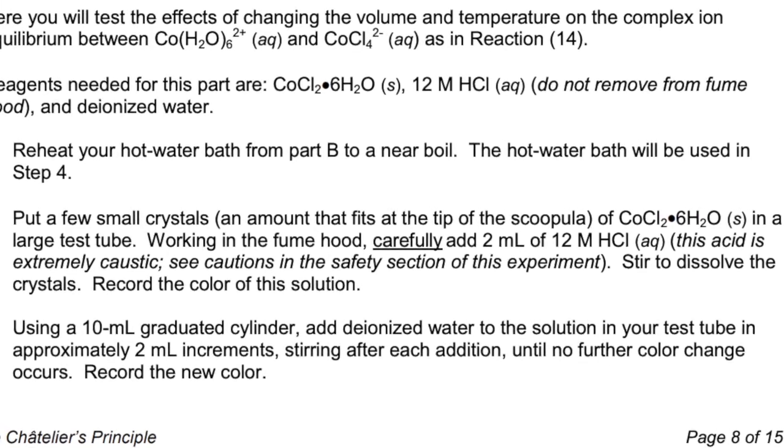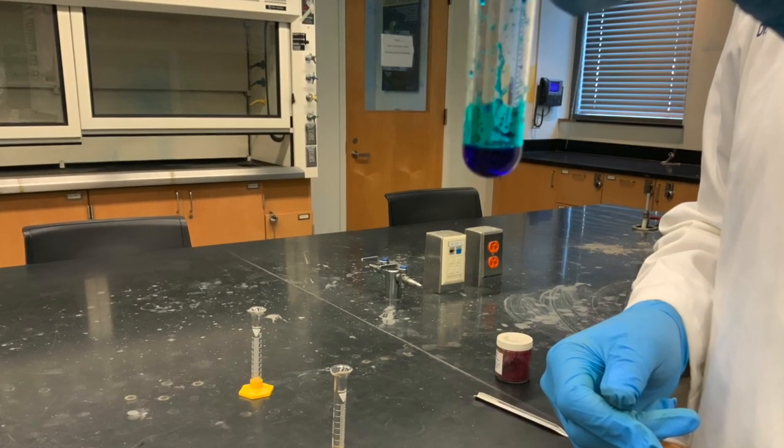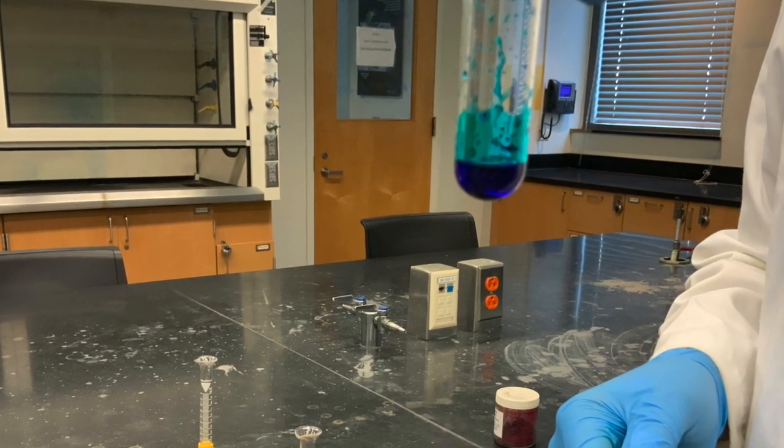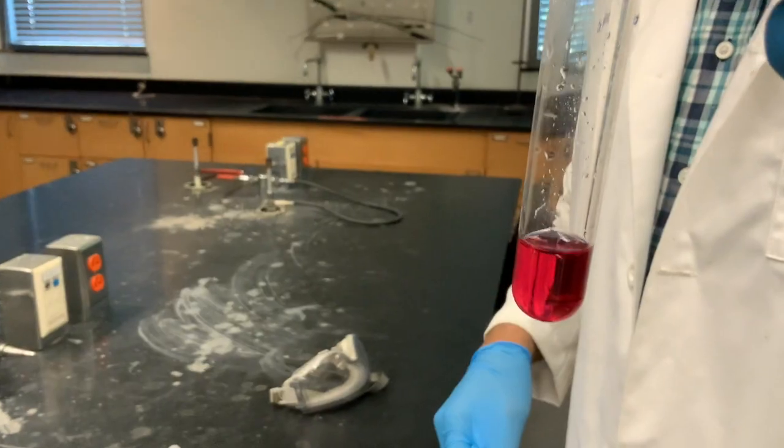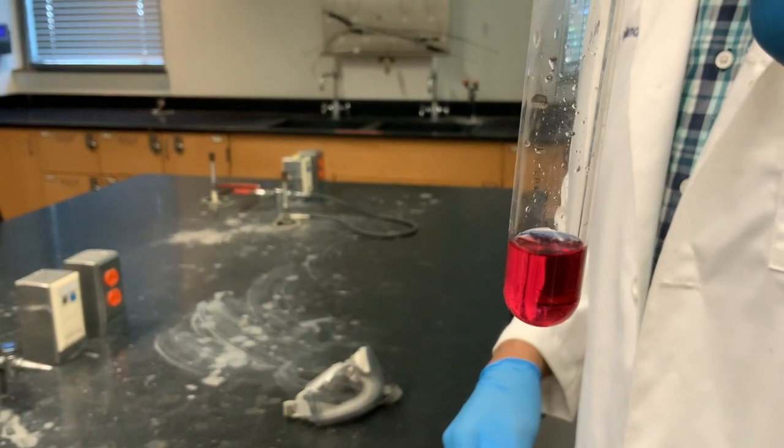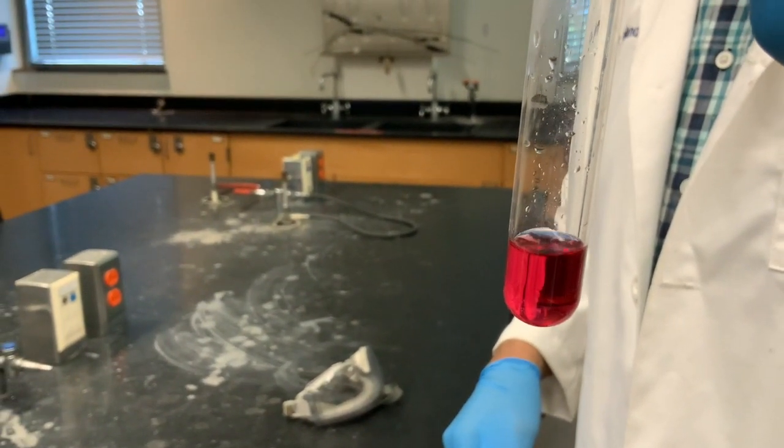Now we continue to Part C, which explores the equilibrium of a complex ion. We start with a solution made up of solid cobalt chloride mixed with 3 drops of 12M HCl. Record the color you observe. We add 1 ml of water into the test tube. We then add another 1 ml and notice a change after 2 ml of water is added. Record this in your lab report.